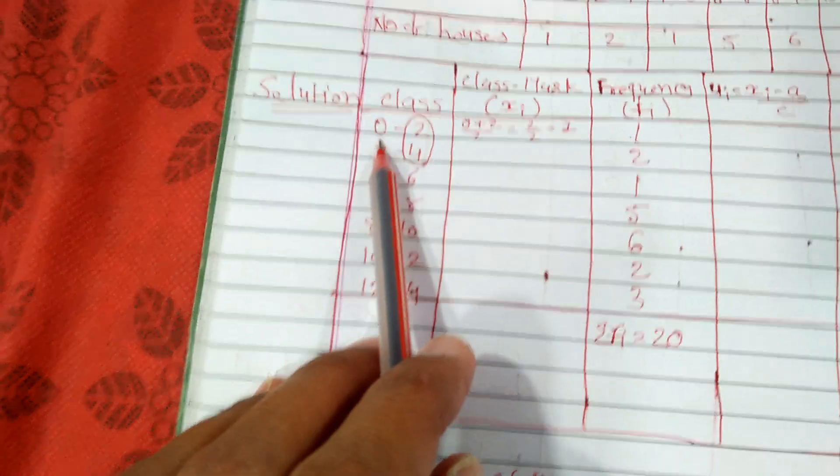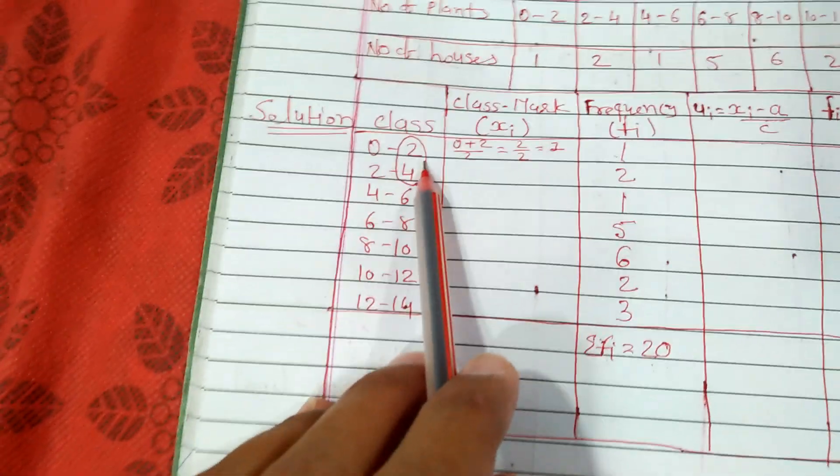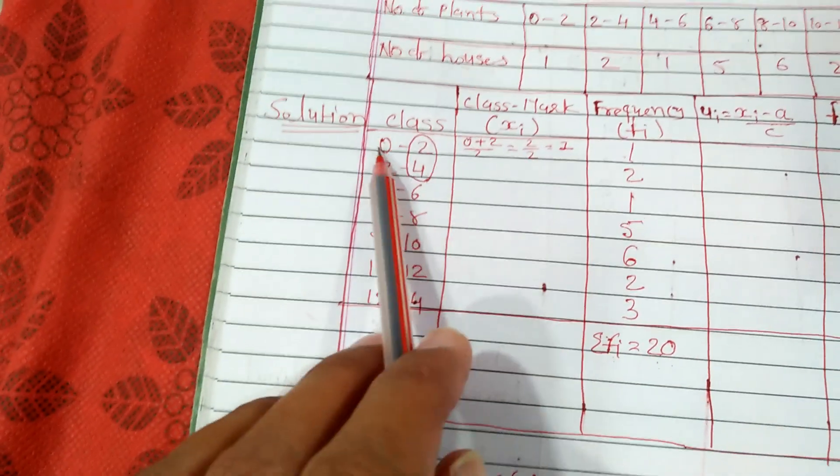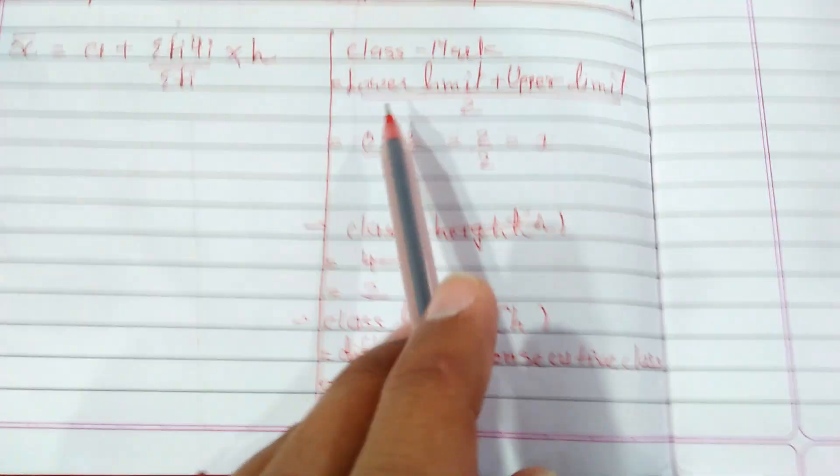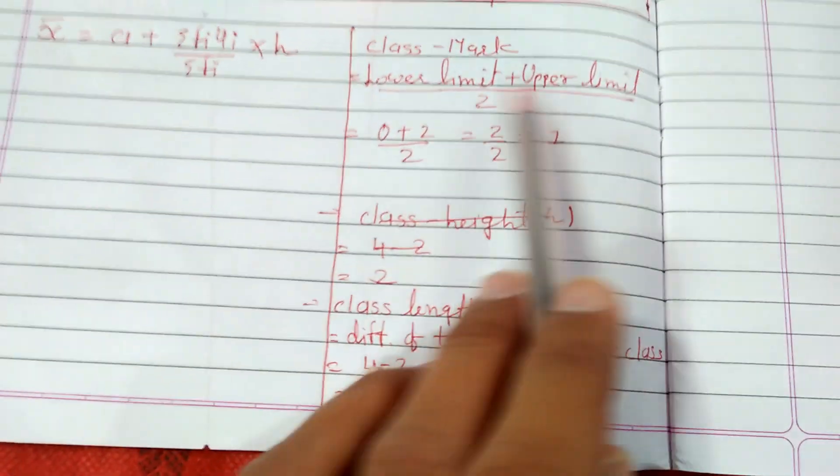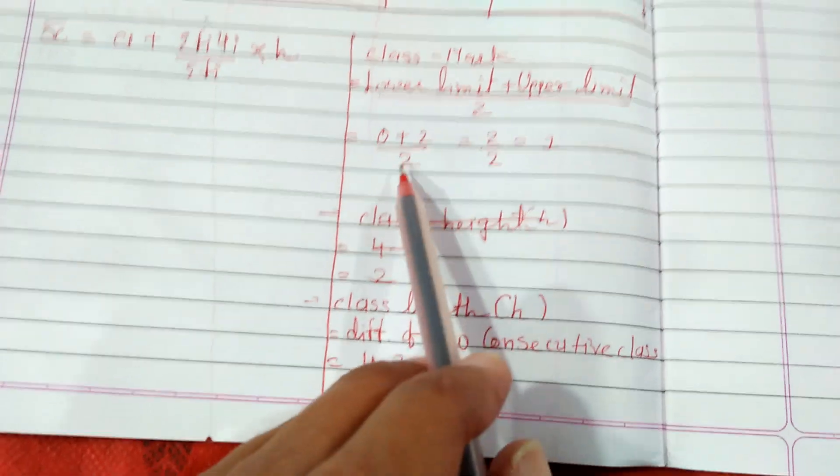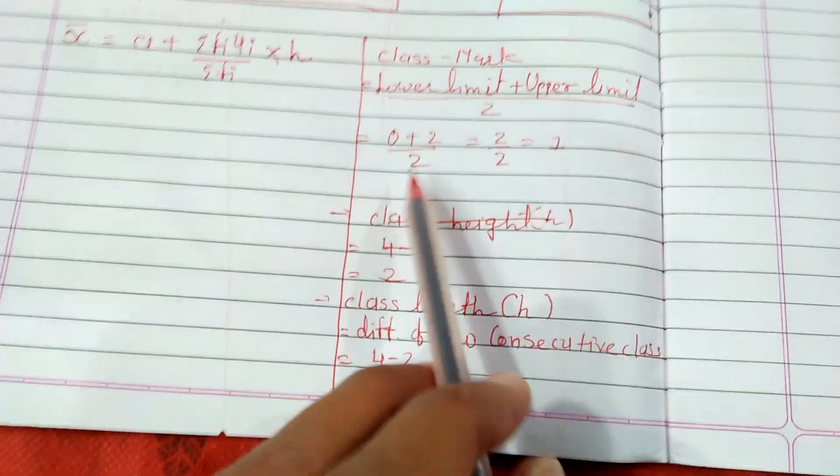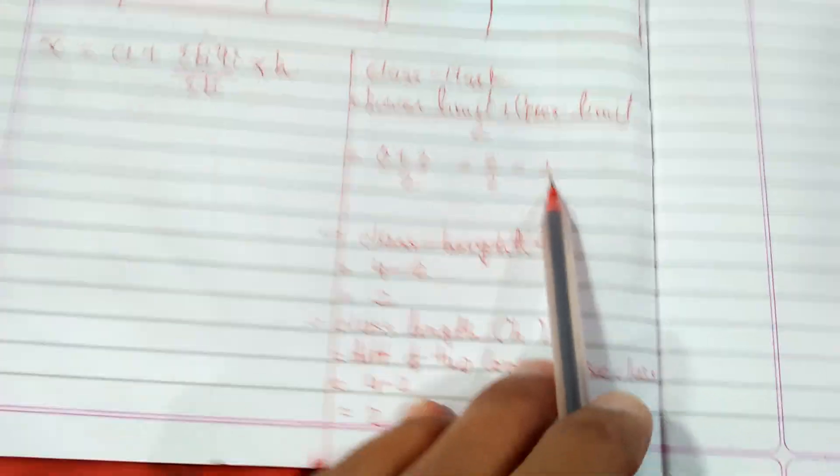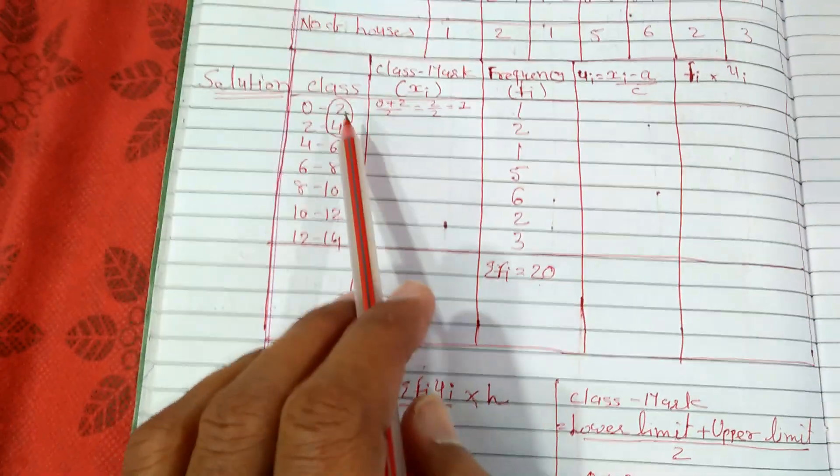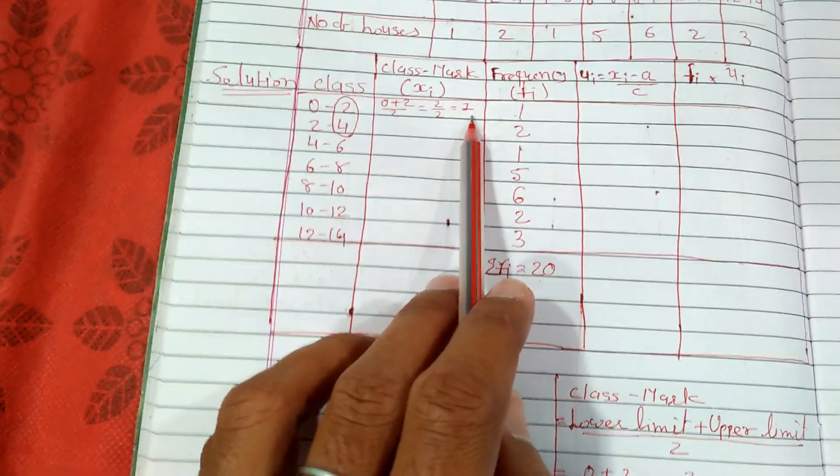For this class, we are having lower limit 0 and upper limit 2. Let us substitute both these values in the formula. So, 0 plus 2 divided by 2 equals 1. The class mark of the first class will be 1.